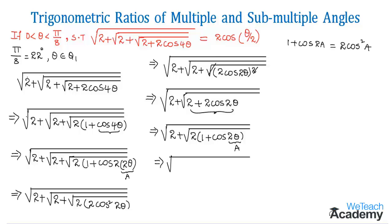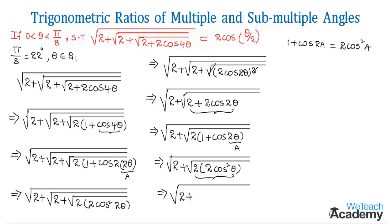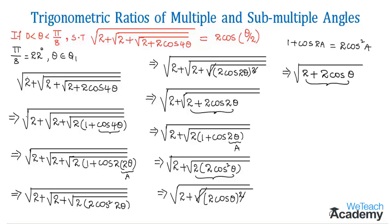Using this formula we get √(2 + √(2·2cos²θ)), which can be written as √(2 + √((2cosθ)²)). The square and square root cancel, leaving us with √(2 + 2cosθ). Taking 2 as the common factor gives √(2(1 + cosθ)).